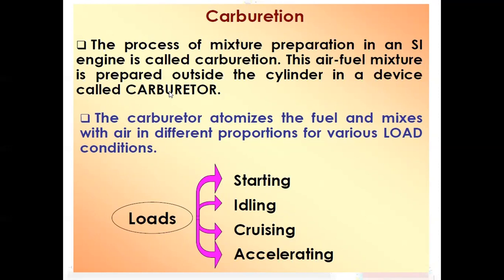The carburetor atomizes the fuel and mixes it with air in proportions depending on the various load conditions. There are four load conditions: starting, idling, cruising, and accelerating. During starting, we need to overcome static friction — which is always greater — so a richer fuel mixture is required, meaning more fuel and less air. During idling, when the engine has just started and we are not running the automobile, a richer mixture is also required.